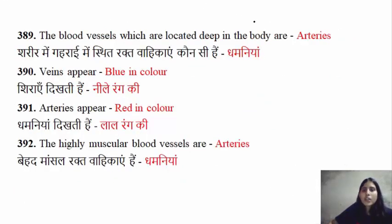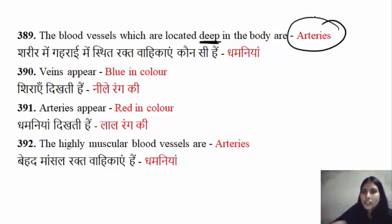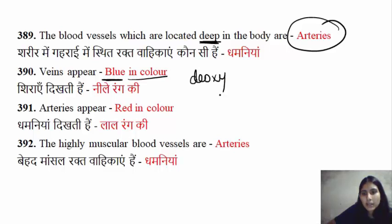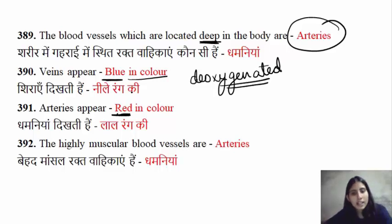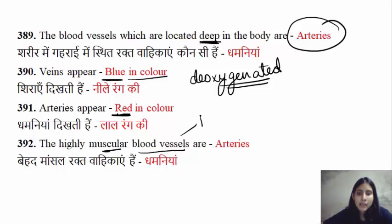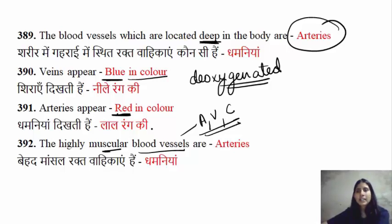The blood vessels — arteries — are located deep in the body. Veins appear blue in color because they carry de-oxygenated blood, which is impure. Arteries appear red because they carry pure oxygenated blood.